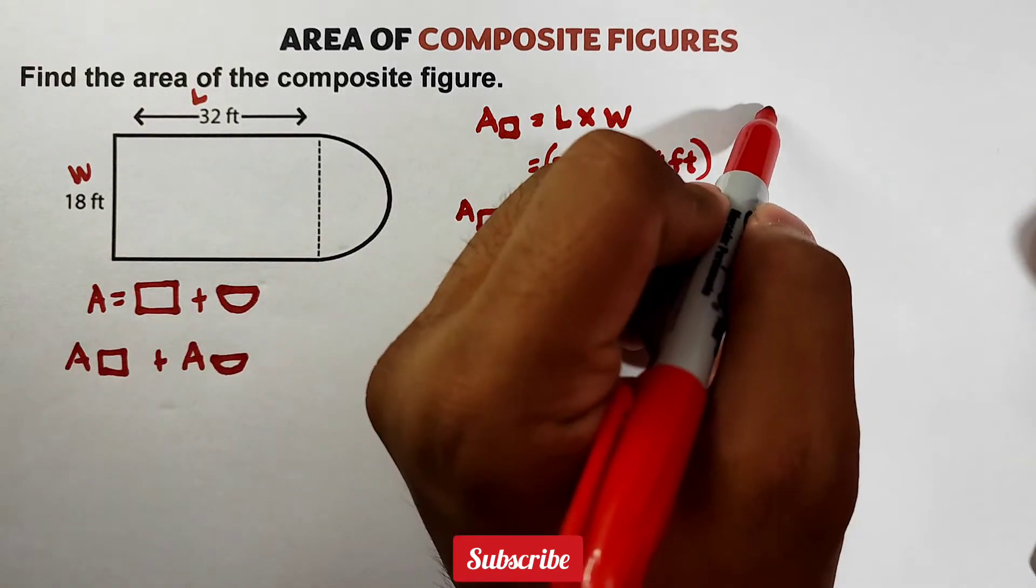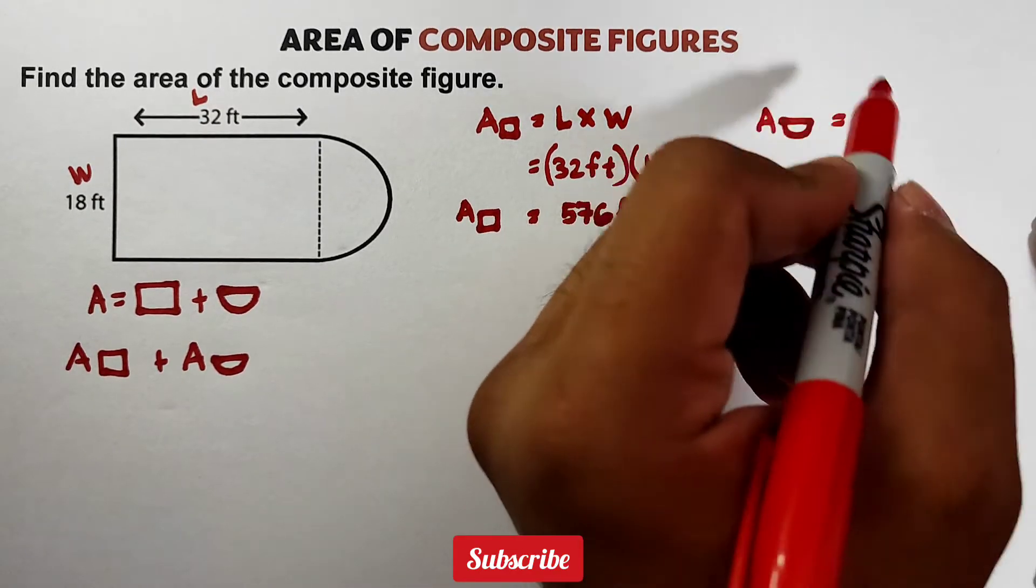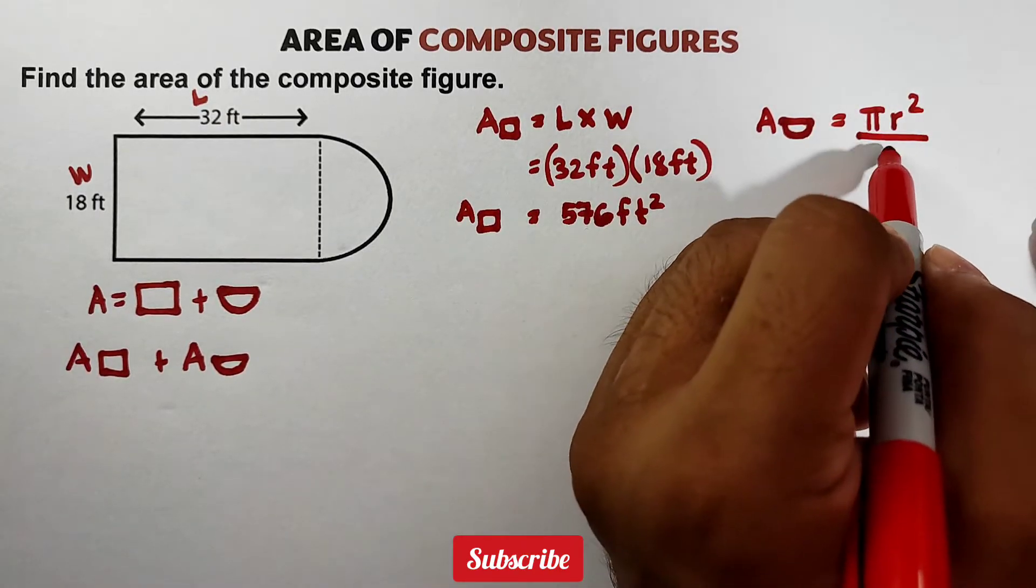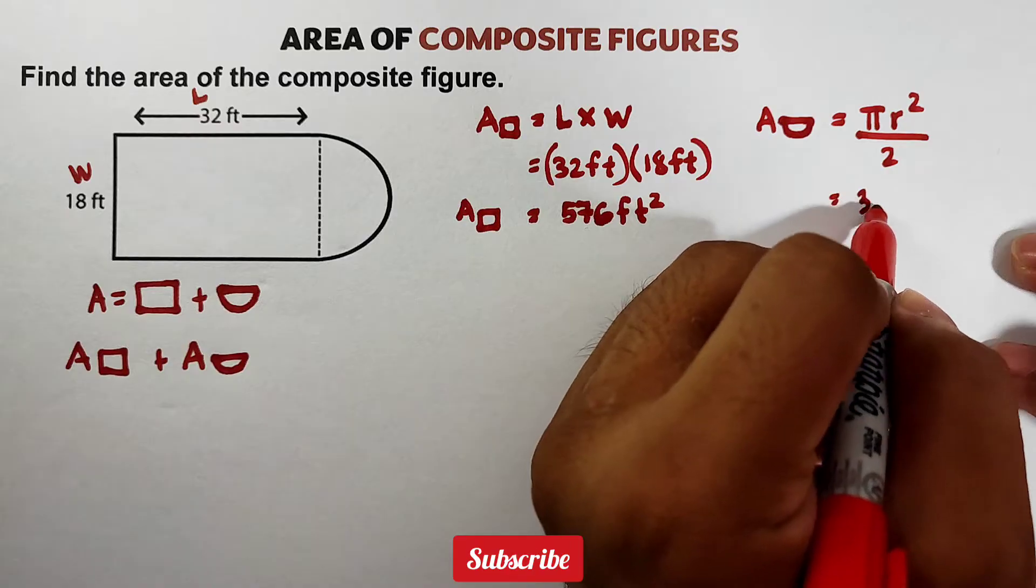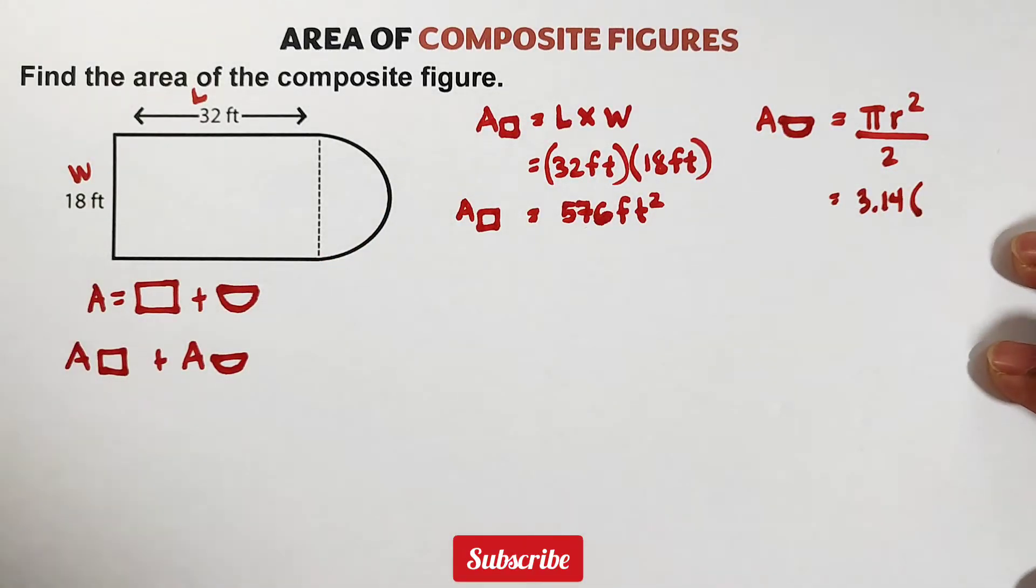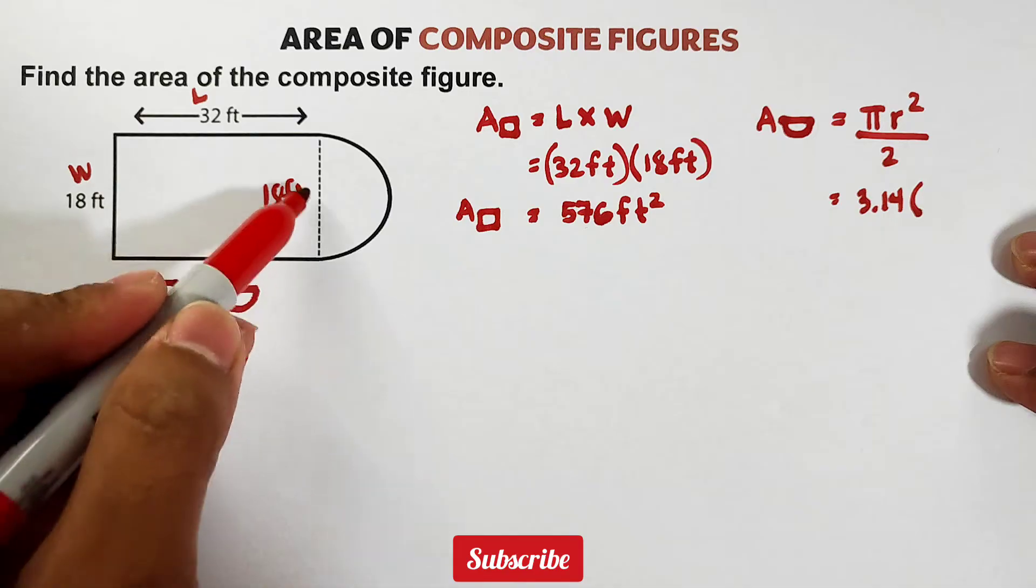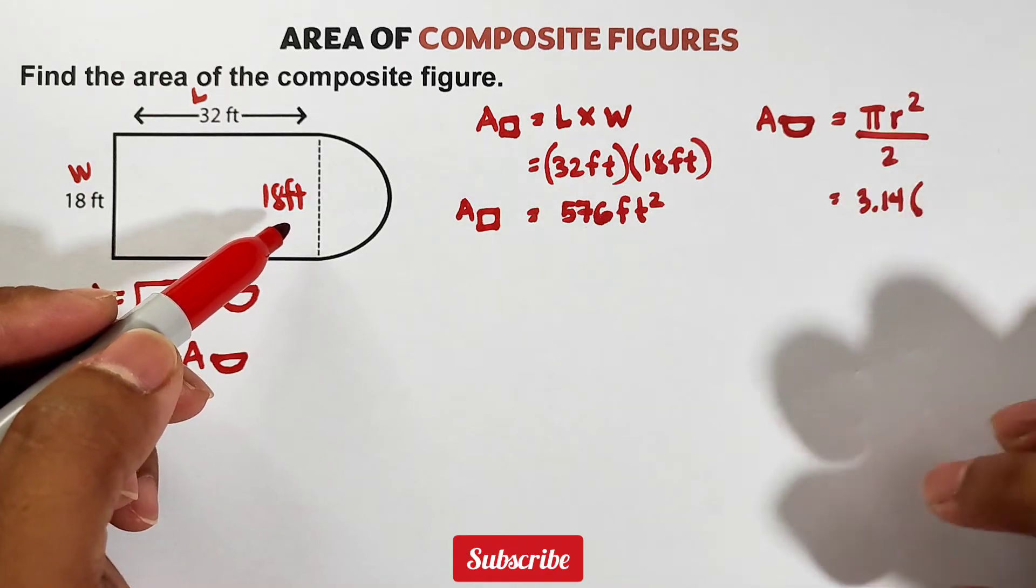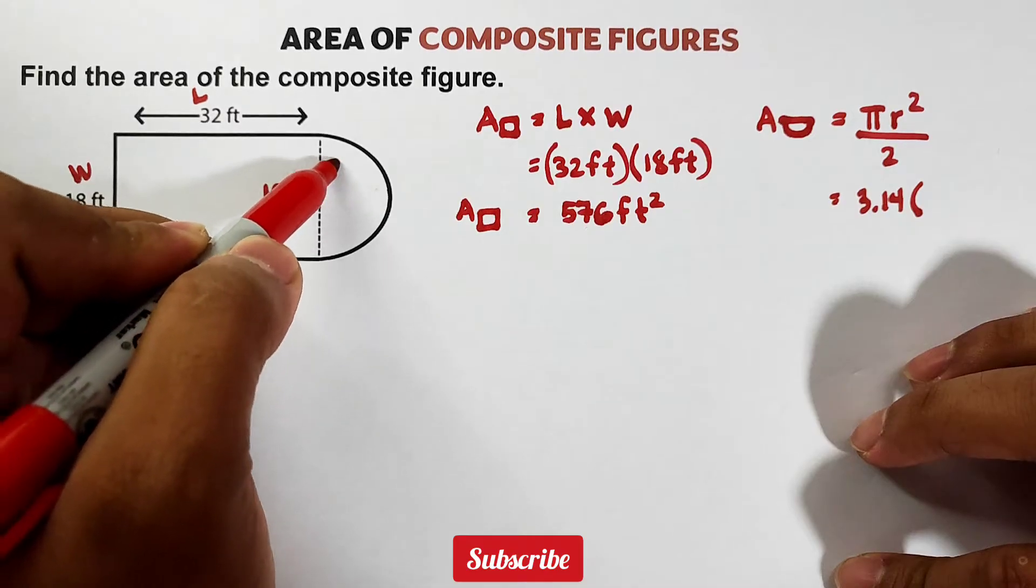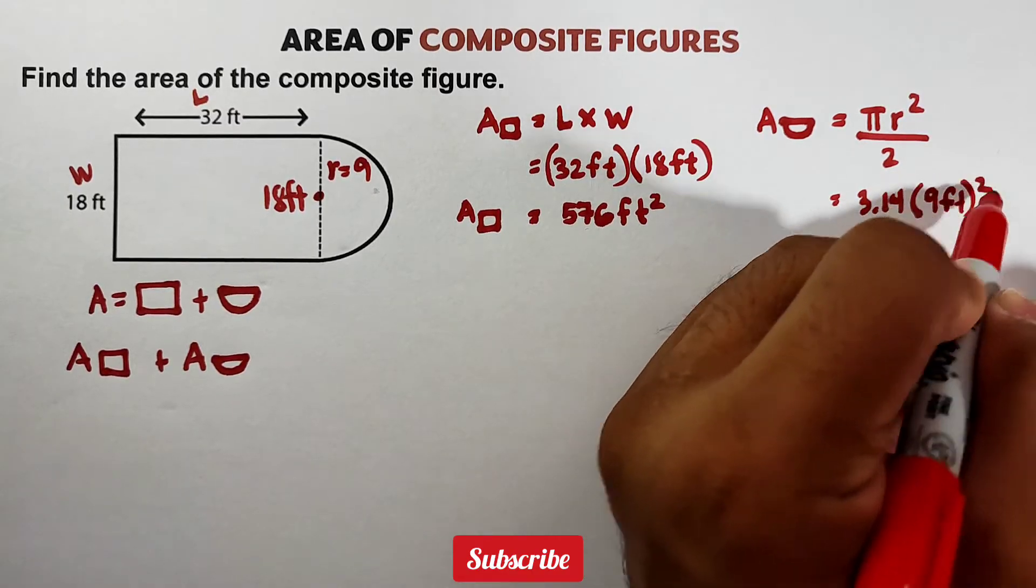So we need to get the area of our half circle. So the formula in getting that area is pi r square over 2. Now, your pi here, we'll use 3.14, times the radius. How do we get the radius? Since this one is 18 feet, meaning this segment or this broken line is also 18 feet. In this half circle, this will serve as your diameter. And remember, to get the radius, radius is just half of your diameter. If this is 18, meaning your radius is equal to 9 feet.